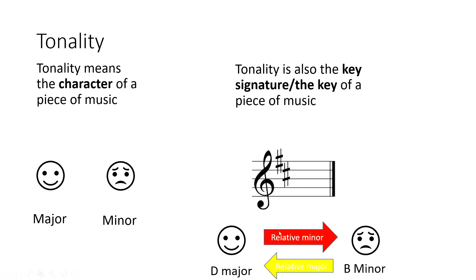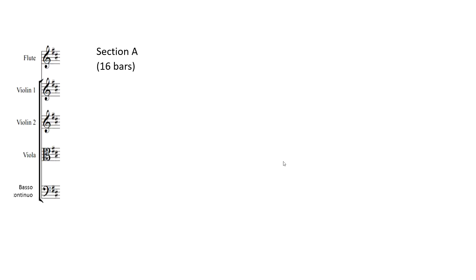When looking at key signatures there are two options. When we look at the very beginning of Badinerie we can see it's got two sharps, so we've got two choices: it could be the positive side of life, D major, or it could be the more negative side of life, B minor. When we listen to Badinerie, you can tell it sounds negative and sombre — it's not positive. So Section A begins in B minor.